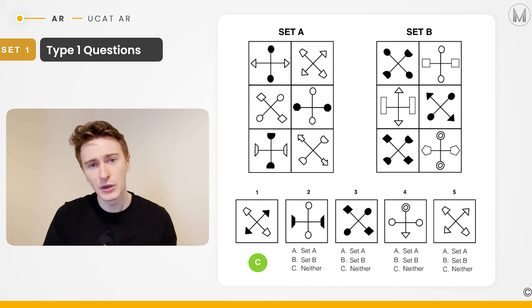If we then move on to test shape number two, we've got that plus type of orientation with mixed black and white. That belongs to set A. If we look at test shape number three, we've got a cross orientation and all of those shapes attached are black. That fits the definition for set B.